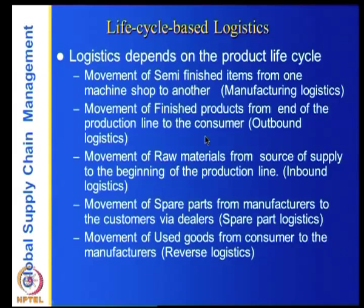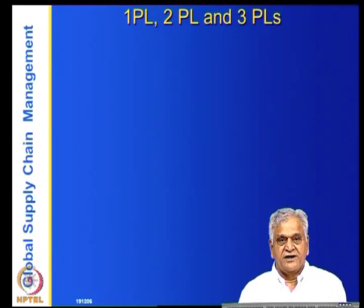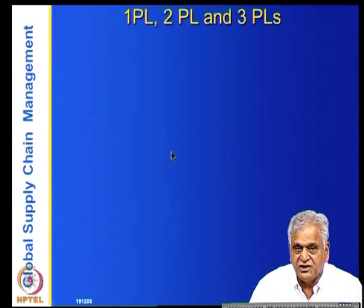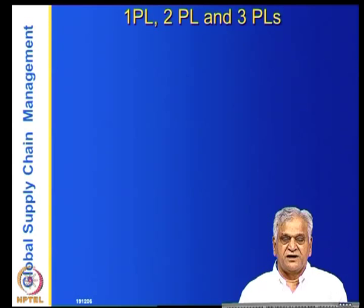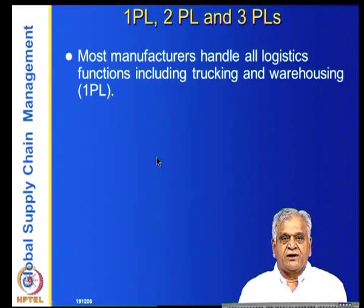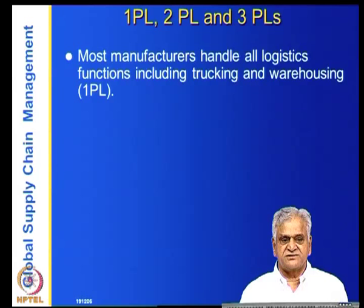In logistics literature, people distinguish between single-party, second-party, third-party, and fourth-party logistics players. In single-party logistics (1PL), the manufacturer handles all logistics functions including trucking and warehousing. You have a separate division for logistics, you own your trucks and warehouses, and you do not depend on anyone else for the logistics function.